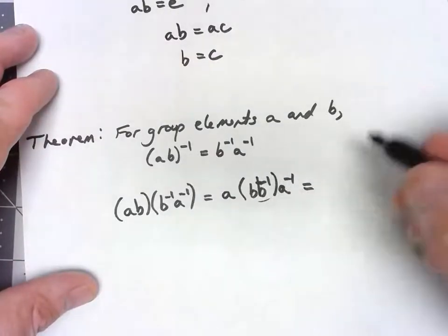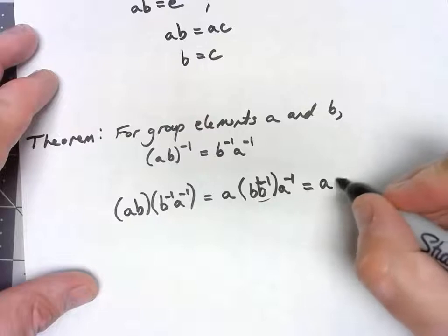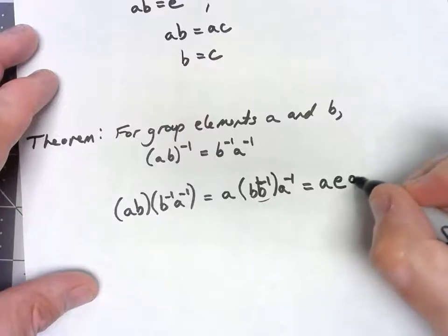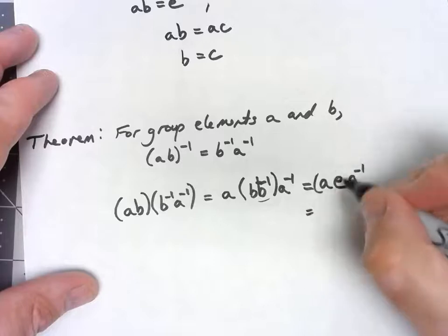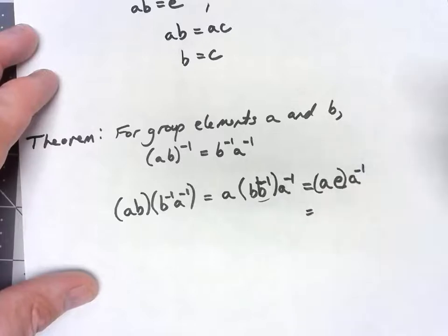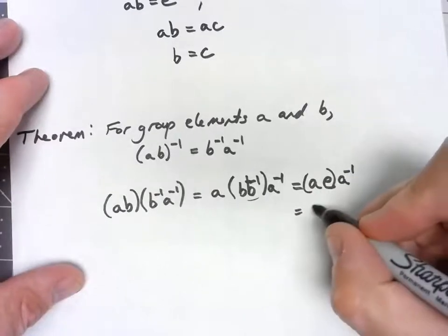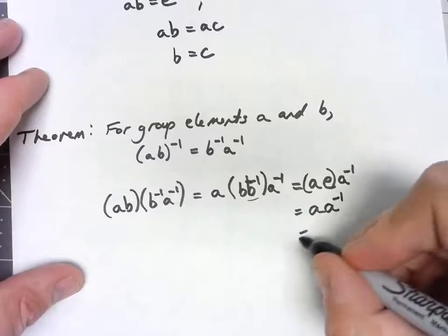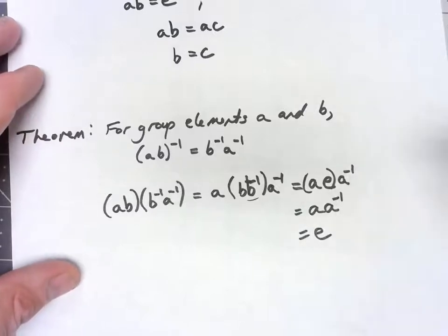B times B inverse we know has to be the identity, so we've got A, E, A inverse. If we do A times E, that has to be A, A inverse, and A times A inverse is equal to E.